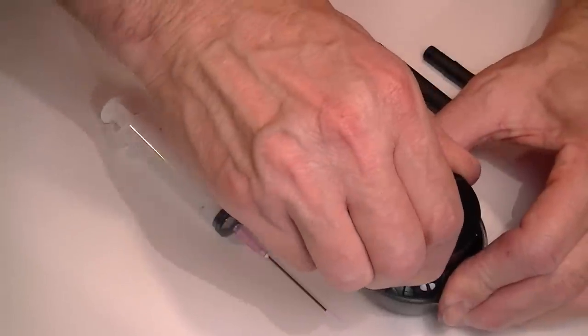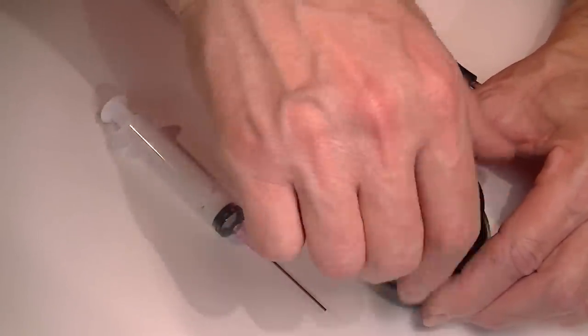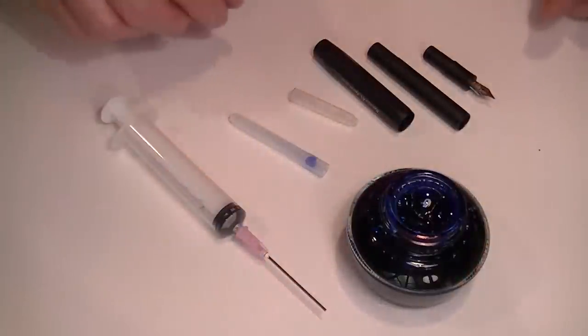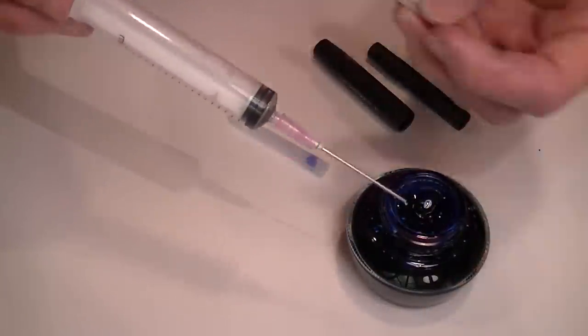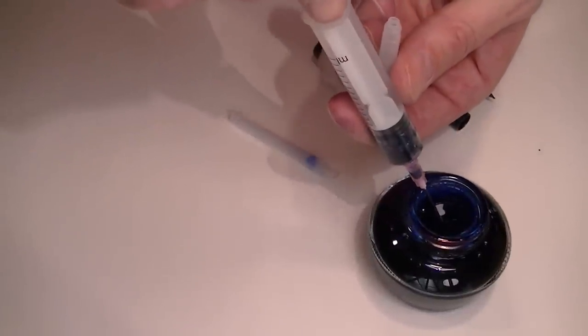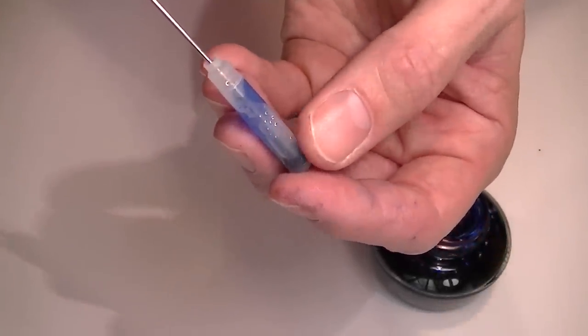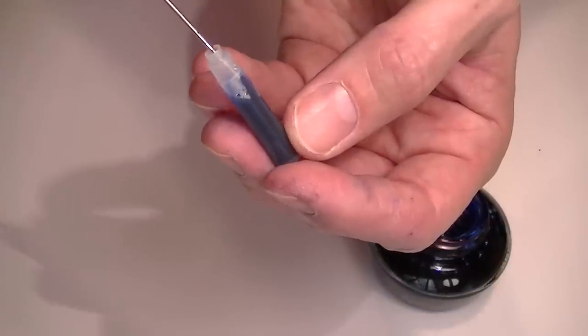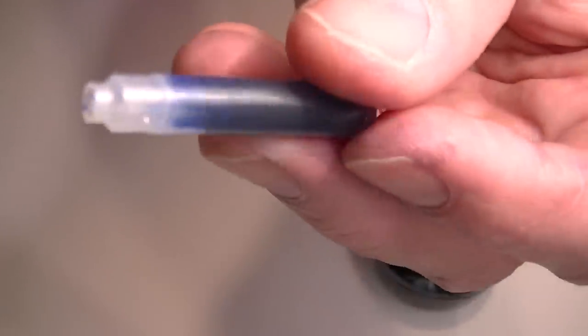Then what you do is choose your favorite ink. Right here I have a Sailor Gentle ink which I cannot use with my Kaweco pen. So I'm going to fill the standard international cartridge with the Sailor ink. So I simply pull the ink into the syringe and insert that syringe into the cartridge and slowly fill that cartridge. I usually don't go above that line there that's in the cartridge.